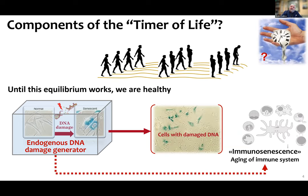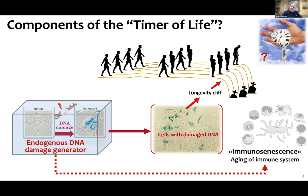There is no more effective clearance of these cells, which creates what they name the longevity cliff, when there is a progressive inflammation increase and death becomes unavoidable. So the key question in this picture is: what is the endogenous DNA damage being generated?